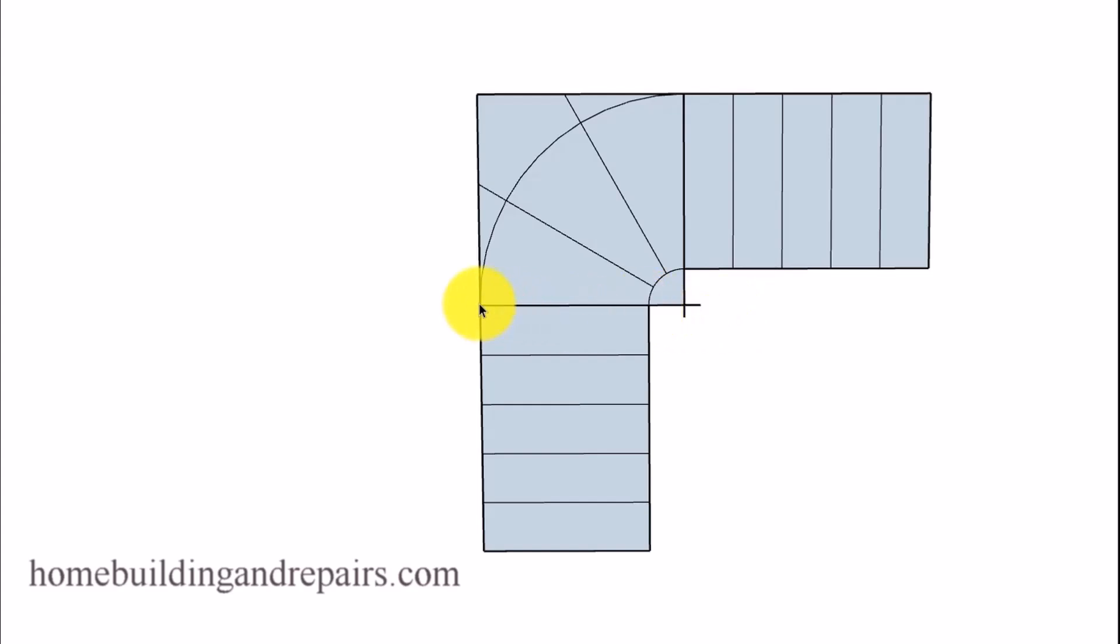But the width of the stairway usually has a minimum. And on a residential set of stairs, it's going to be 36 inches. So if I was to do something like this, I'm not going to have a problem. I'm just going to measure from here to here. Make sure that it is above the minimum.